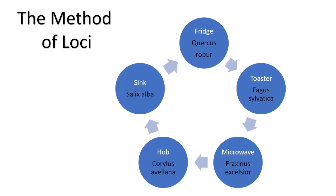You attach one plant to each location. At the fridge we attach Quercus robur — the oak. At the toaster, Fagus sylvatica — the beech. At the microwave, Fraxinus excelsior — the ash. At the hob, Corylus avellana — the hazel. At the sink, Salix alba — the white willow. So you think: go to the fridge and visualize an oak leaf or acorn in there.